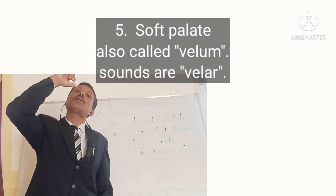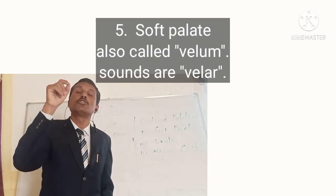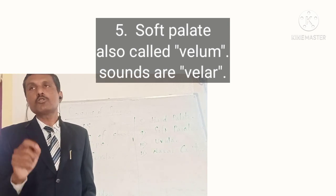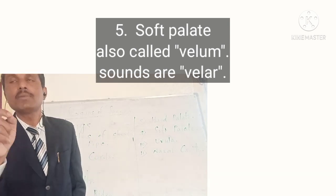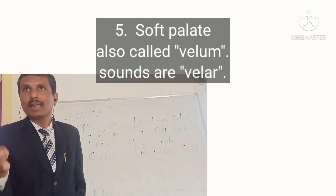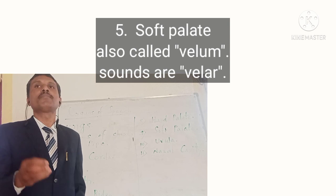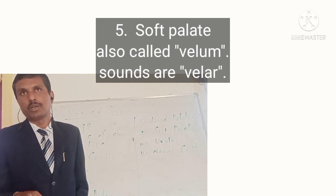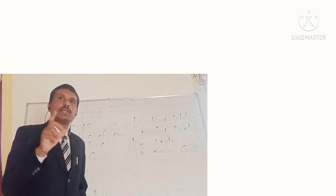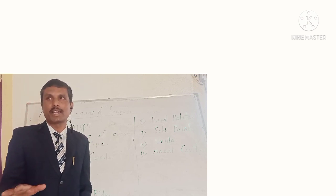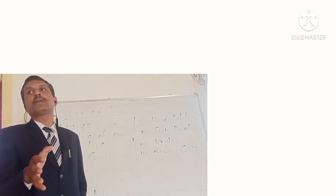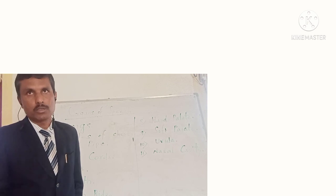After hard palate, we have the soft palate — a soft structure. Soft palate is also called velum. As soft palate is also called velum, sounds produced with the help of the tongue and the soft palate are called velar sounds. There are also some sounds produced with the help of the uvula — these are called uvular sounds, though uvular sounds do not exist in English.